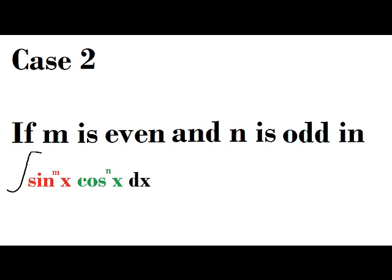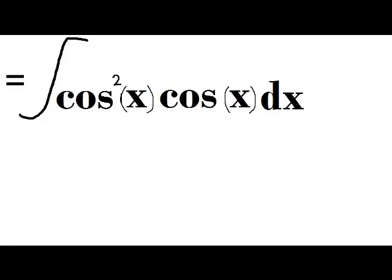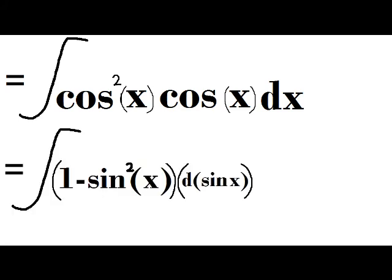Except for the fact that when you get to the point where you have, say, cosine squared of x, then cosine of x, dx, as in this problem, you replace cosine of x dx with d sine of x. And then you continue solving it like you would case one problem.